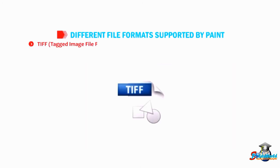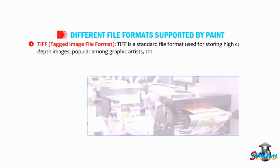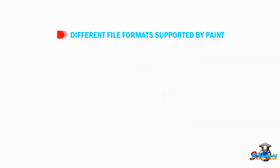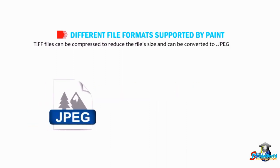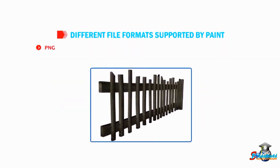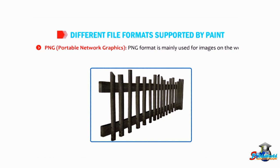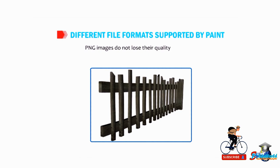TIFF is a standard file format used for storing high color depth images, popular among graphic artists, the publishing industry, and photographers. TIFF files can be compressed to reduce the file size and can be converted to JPEG, GIF, or PDF format by using a special software called Image Converter Plus. PNG (Portable Network Graphics): PNG format is mainly used for images on the web. It supports a wide variety of colors but does not support animation. PNG images do not lose their quality on editing.